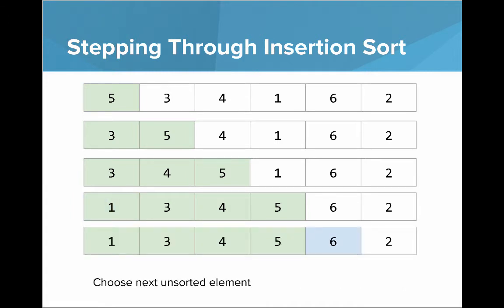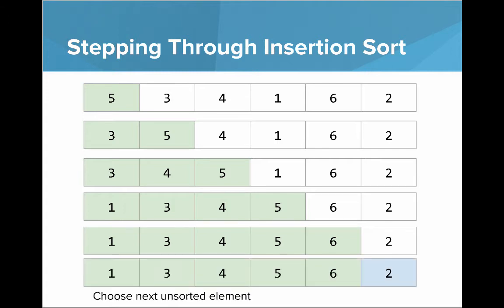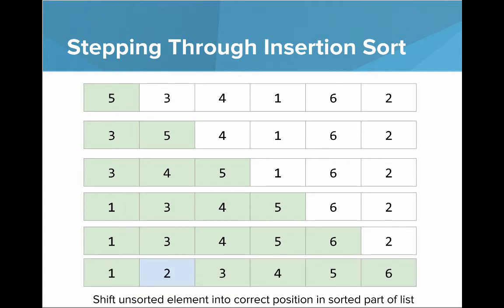Now that left part of the list is sorted again. Now we choose the next unsorted element, which is six, and we shift it into its correct position — which it's already at. Now it's sorted. Now we choose the next unsorted element and shift that into its correct position in the sorted part of the list. Now the whole list is sorted.